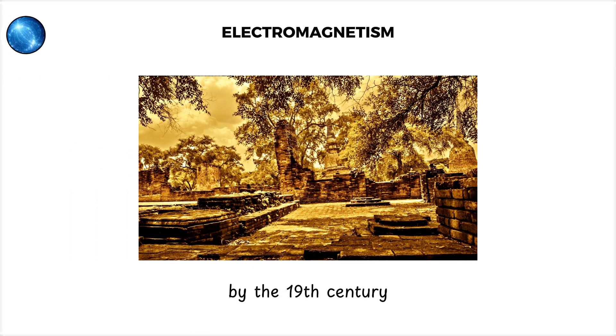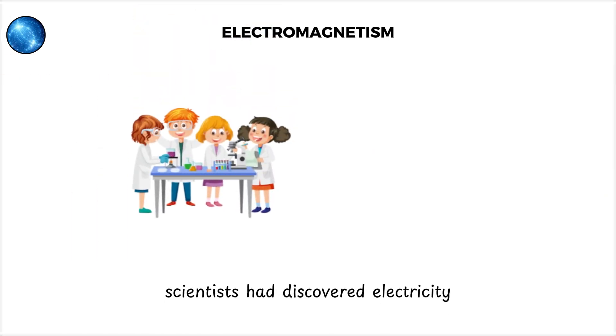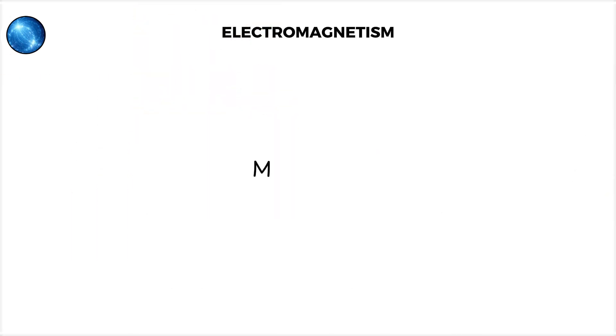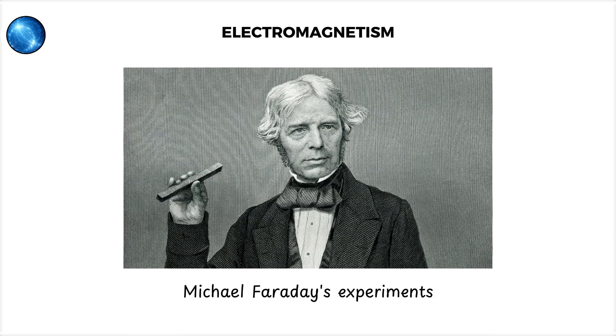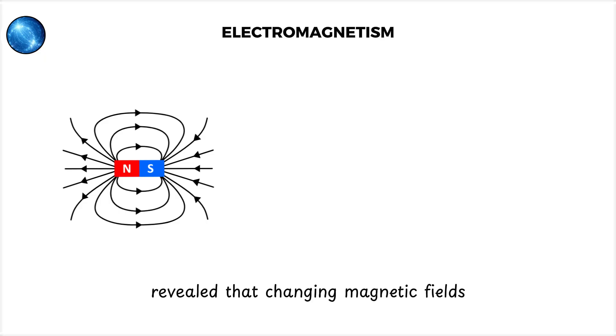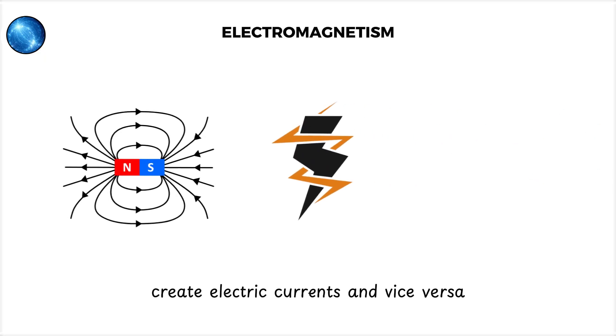Electromagnetism. By the 19th century, scientists had discovered electricity, magnetism, and the strange fact that the two were linked. Michael Faraday's experiments revealed that changing magnetic fields create electric currents, and vice versa.